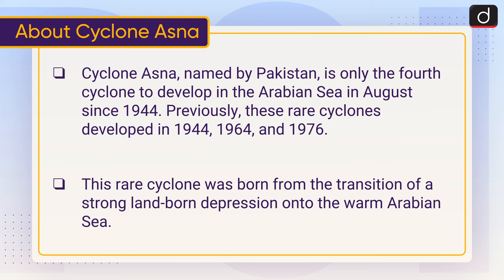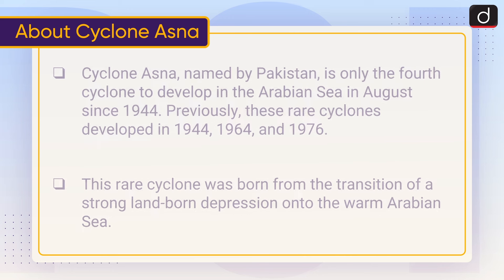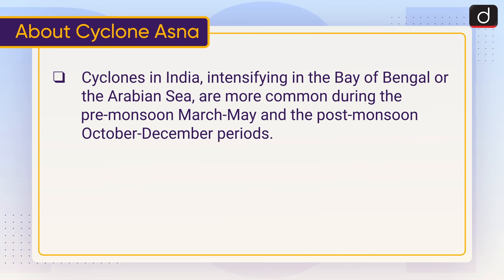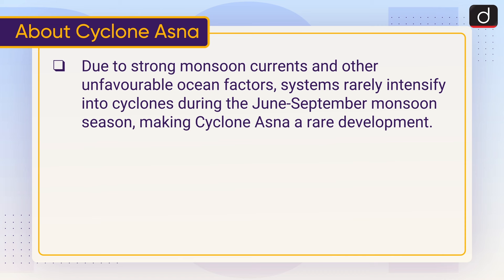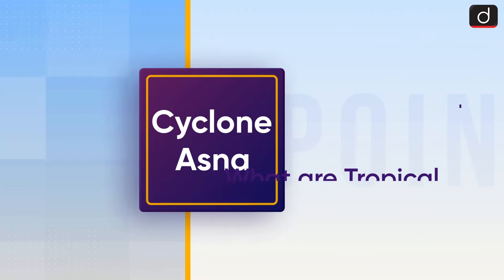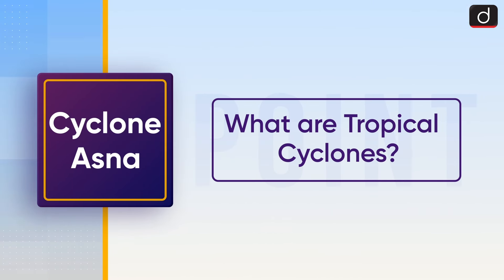This rare cyclone was born from the transition of a strong land-borne depression onto the warm Arabian Sea. Cyclones in India intensifying in the Bay of Bengal or the Arabian Sea are more common during the pre-monsoon period (March–May) and the post-monsoon period (October–December). Systems rarely intensify into cyclones during the June–September monsoon season, making Cyclone Asana a rare development.